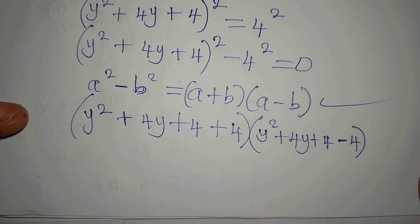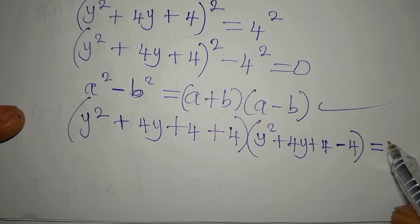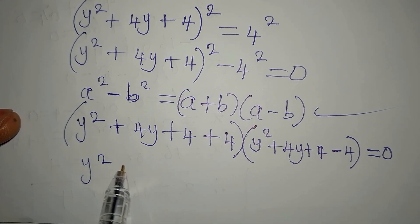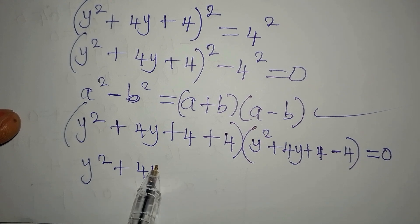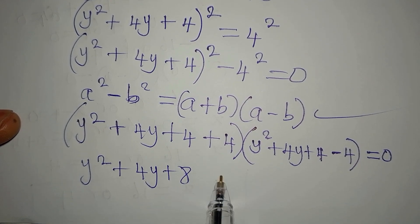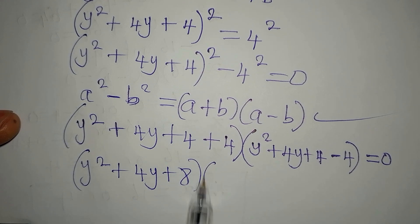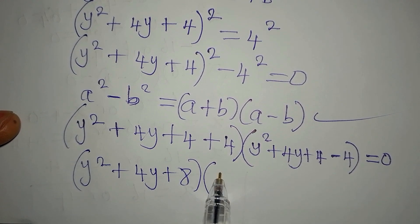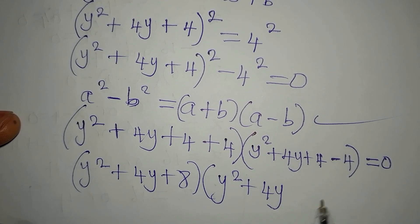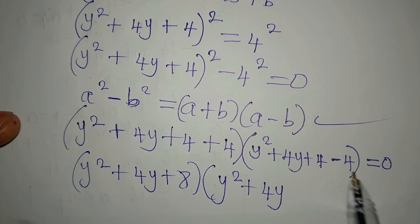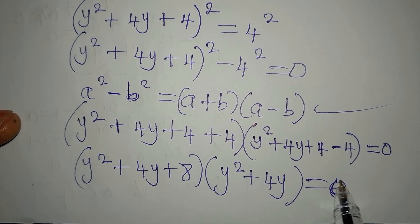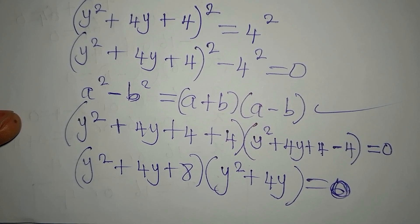From here, the first bracket simplifies to y squared plus 4y plus 8, since 4 plus 4 is 8. The second bracket gives us y squared plus 4y, since 4 minus 4 is 0. We equate this product to 0.